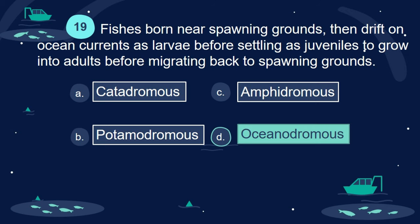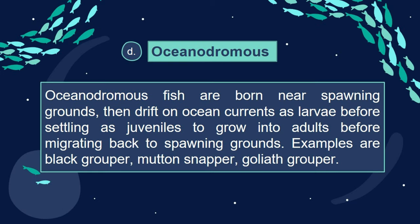Answer: D. Oceanodromous. Oceanodromous fish are born near spawning grounds, then drift on ocean currents as larvae before settling as juveniles to grow into adults before migrating back to spawning grounds. Examples are black grouper, mutton snapper, and goliath grouper.